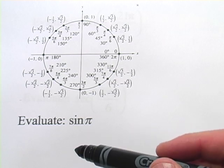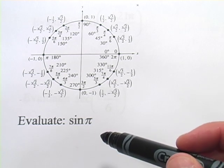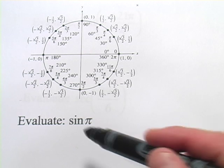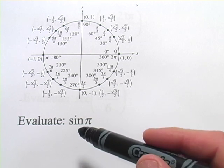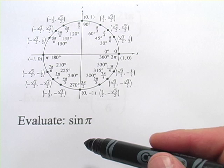In these problems, we're being asked to evaluate the exact values of some trigonometric functions. For example, in this first one, we need to find the sine of pi. What is that exactly?